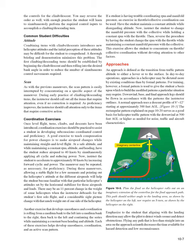Coordination Exercises. Once level flight, turns, climbs, and descents have been introduced, coordination exercises should be practiced to assist the student in developing subconscious coordinated control. A good exercise is to make airspeed changes while maintaining straight and level flight. At a safe altitude, while maintaining a constant RPM, altitude, and heading, have the student reduce airspeed to 40 knots by simultaneously applying aft cyclic and reducing power, then accelerate to approximately 80 knots by increasing forward cyclic and power. Allowing stable flight for a few moments and pointing out the helicopter's attitude at different airspeeds will help the student become familiar with that particular helicopter's attitude set by the horizontal stabilizer. Note: there may be an 11% change in the weight of some helicopters when the instructor deboards for the student's first solo flight, causing a considerable sight-picture change.